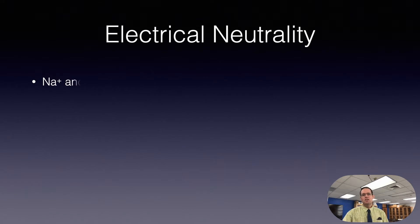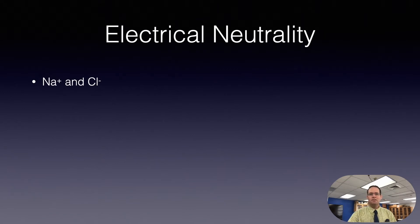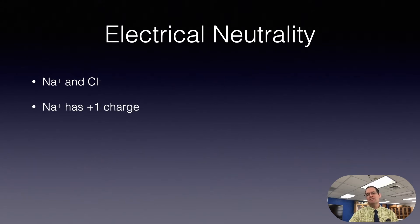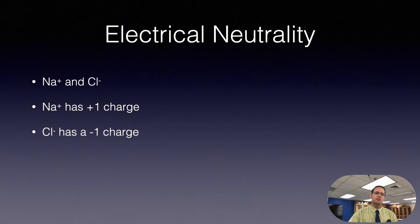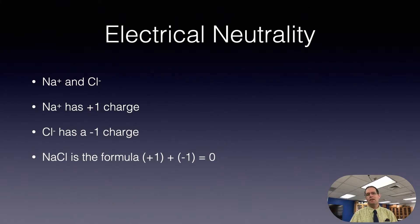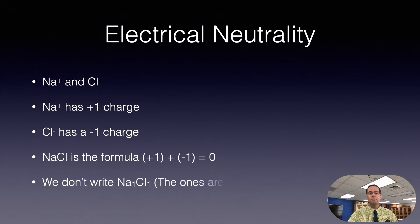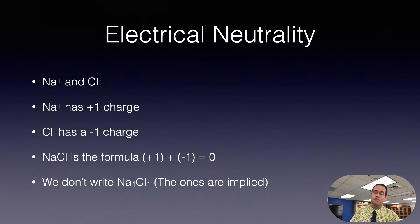Let's take a look at Na⁺ and Cl⁻ — we call these sodium ion and chloride respectively. Sodium has a +1 charge, chlorine has a −1 charge, and so when you stick them together you have NaCl, because the +1 and −1 give an overall charge of zero. We don't write NaCl₁ because the ones are implied — we never write the ones in chemistry.